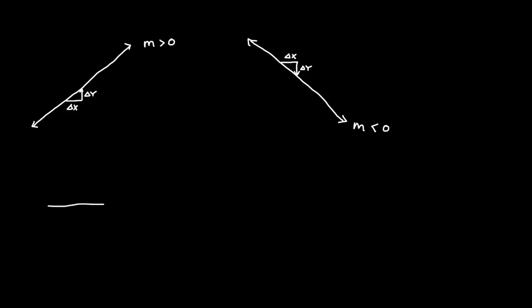We also deal with things like a horizontal line. A horizontal line does have a slope — we say that the slope is zero. Then of course we have the vertical line, which is not a function at all. We note here that the slope is undefined, or the slope does not exist.